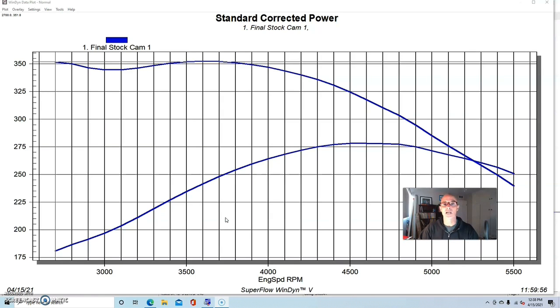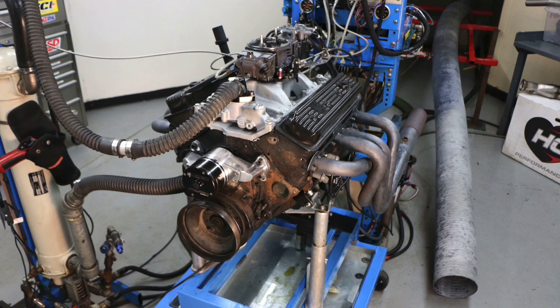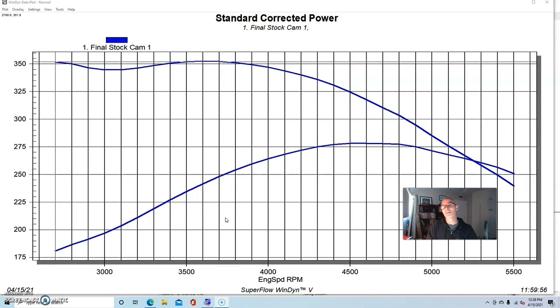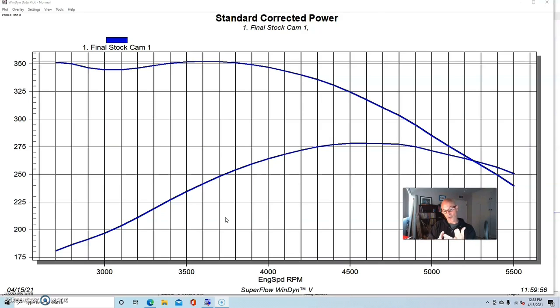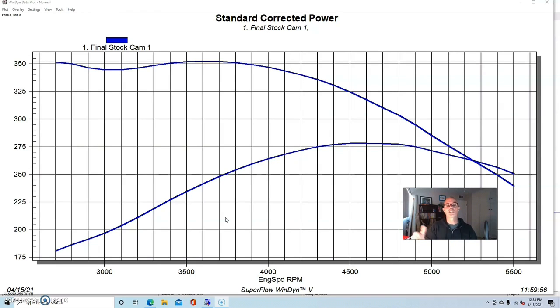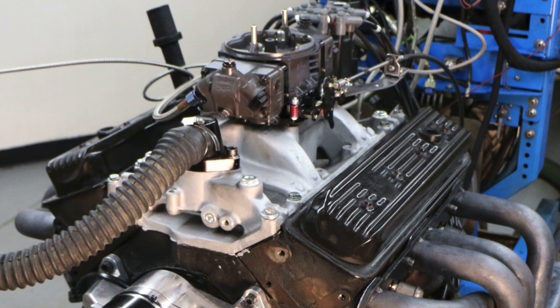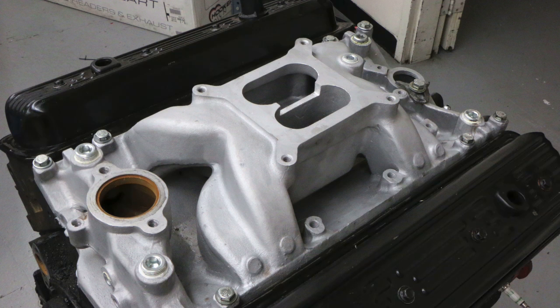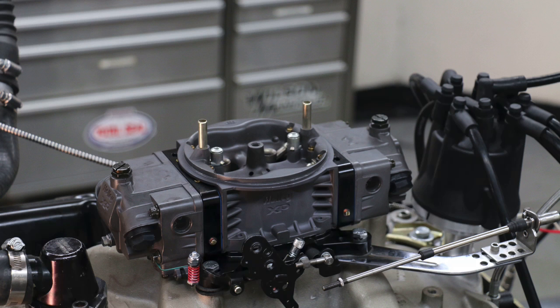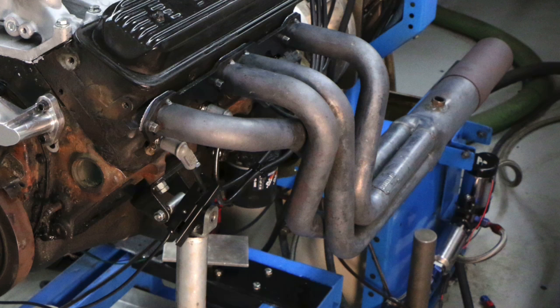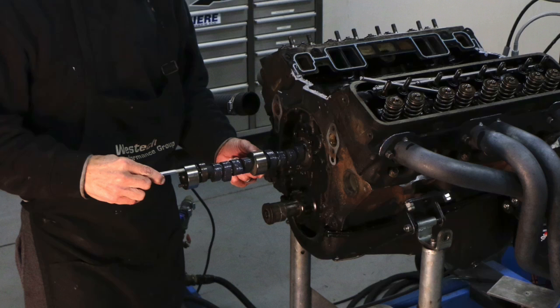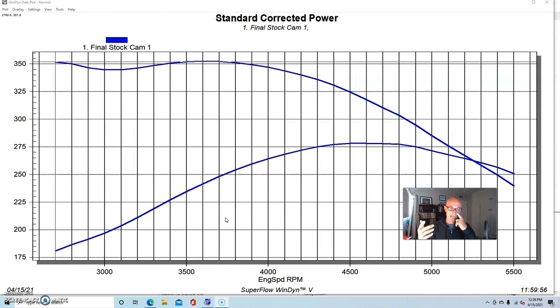So we're going to show you two upgrades with the same camshaft on two different motors. We'll start off with our mild combination - this is basically a Vortec motor. It was originally a hydraulic roller cam, although we're testing a flat tappet camshaft, but the good thing it does have are the Vortec cylinder heads. This was a junkyard motor. We had removed the fuel injection and replaced it with a simple dual plane carburetor, intake, and distributor.